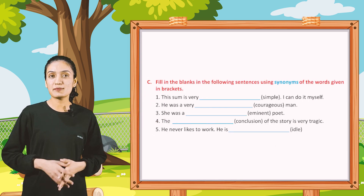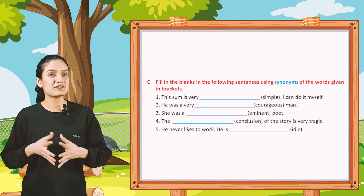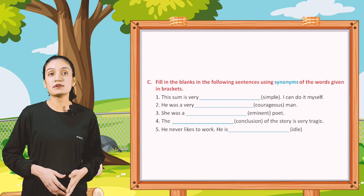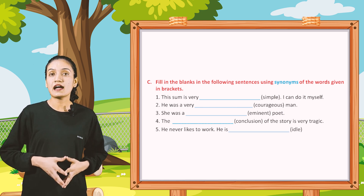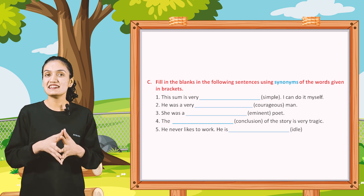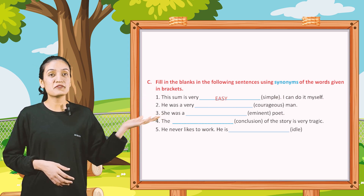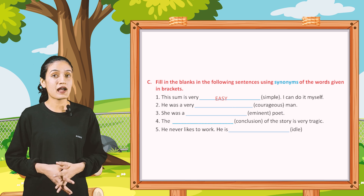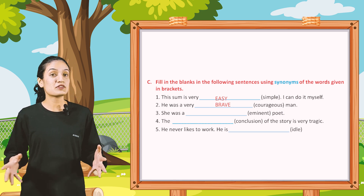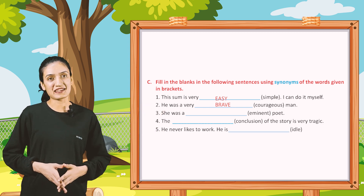Now part C. Fill in the blanks in the following sentences using synonyms of the words given in brackets. First: 'This sum is very dash. I can do it myself.' — You can write 'easy'. Second: 'He was a very dash man.' — You can write 'brave'.